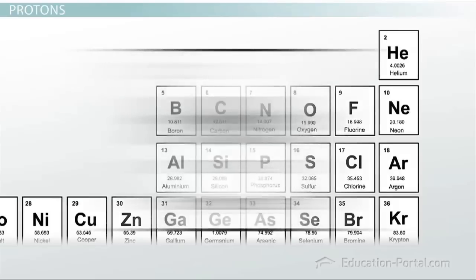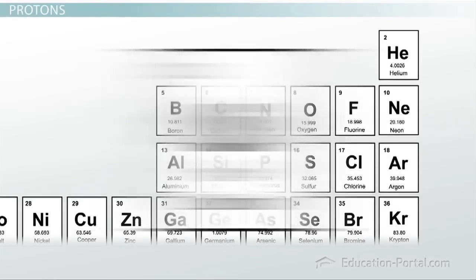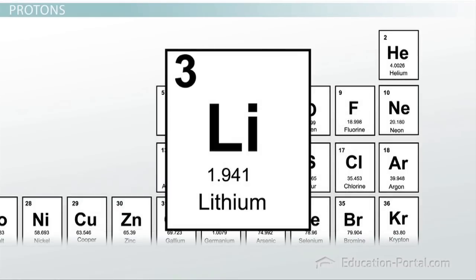So, helium has the number 2 in its box. Lithium has the number 3, and so on. This means that all atoms of helium will have 2 protons, and all atoms of lithium will have 3 protons.